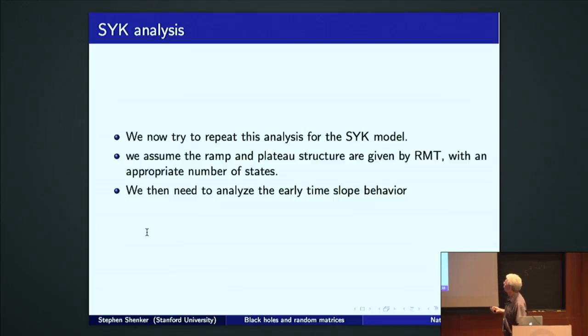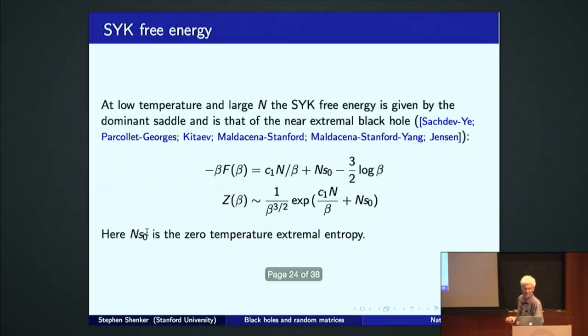Well, now let's try to repeat the analysis in our model black hole. Well, we assume the ramp and plateau are given by random matrix theory. Since the pictures look the same and there's this very strong idea that random matrix dynamics drives the short range, well, drives the statistics of eigenvalues in chaotic systems. We now need to analyze the slope, the early time behavior, to see when it joins on.